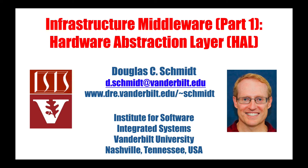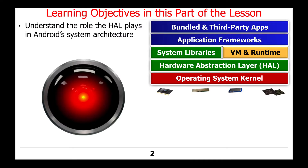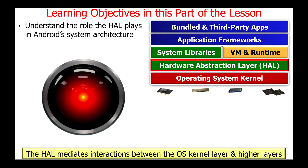Now that we've discussed the overall concept of infrastructure middleware in Android, we'll zoom in on the hardware abstraction layer, or HAL. After watching this part of the lesson, you'll understand the role that the HAL plays in Android system architecture. In particular, the HAL mediates interactions between the operating system kernel layer and higher layers in the Android software stack.